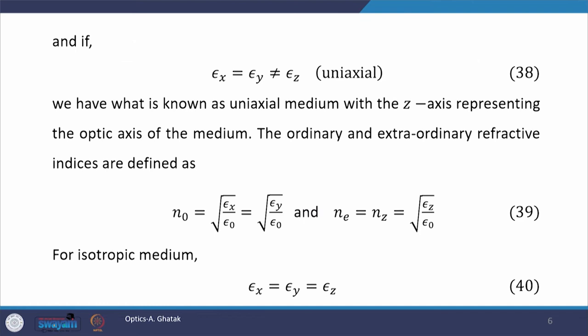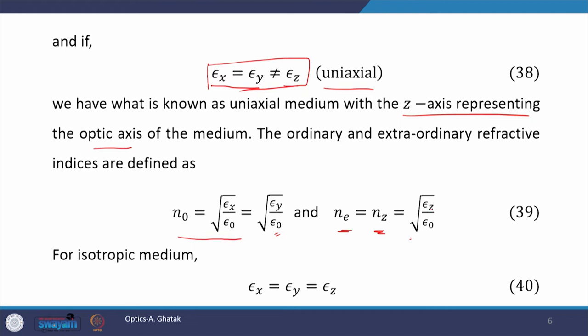The second case is when epsilon x is equal to epsilon y but not equal to epsilon z. The crystals where this relation holds are called uniaxial crystals. In such a medium, the z axis represents the optic axis. The ordinary and extraordinary refractive indices in uniaxial crystals are defined as: n0 equals square root of epsilon x by epsilon 0, which equals square root of epsilon y by epsilon 0; and ne, the extraordinary index, equals nz equals square root of epsilon z by epsilon 0, because nx equals ny but this is not equal to nz.